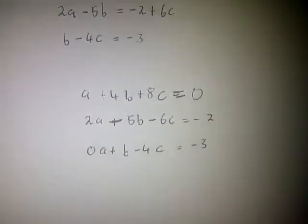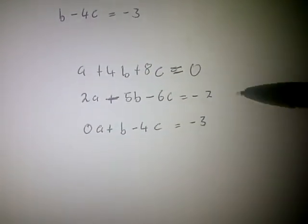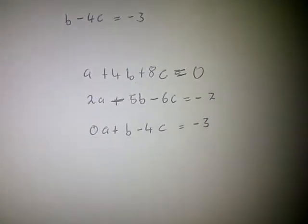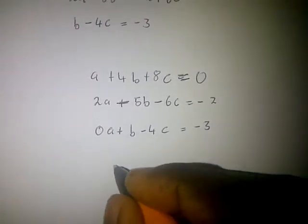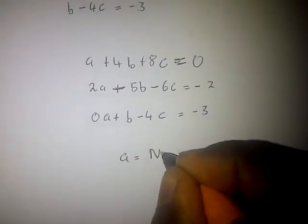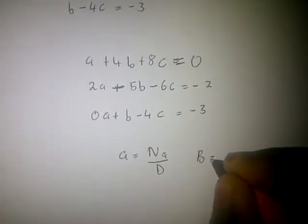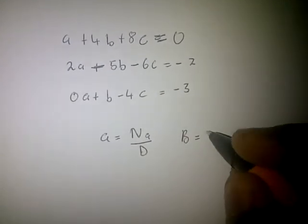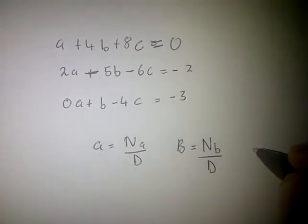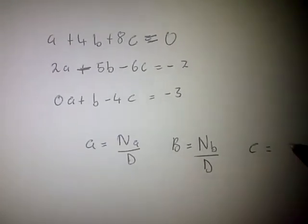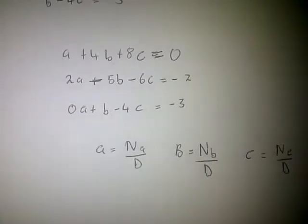Now our equations are rearranged. We know that to solve: a equals Na over D, b equals Nb over D, and c equals Nc over D.